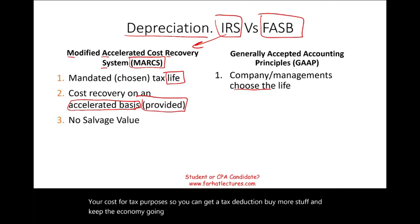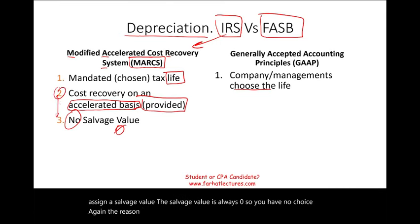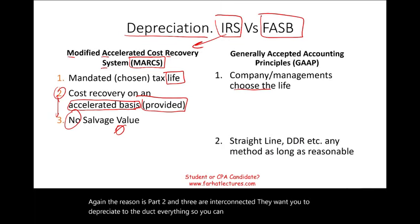And there's no salvage value under the tax system. You don't assign a salvage value — it's always zero, so you have no choice. The reason is that parts two and three are interconnected: they want you to depreciate and deduct everything so you can get a tax deduction.